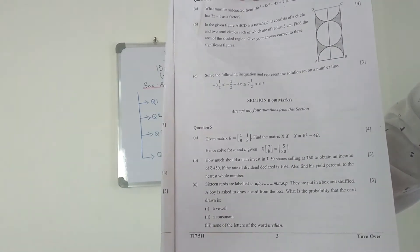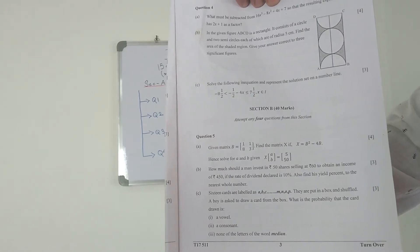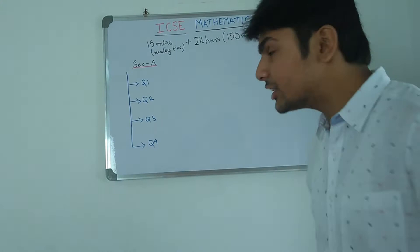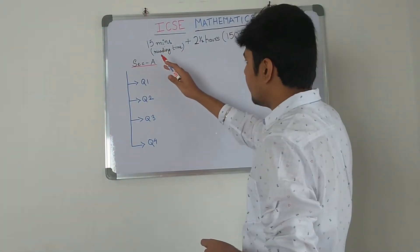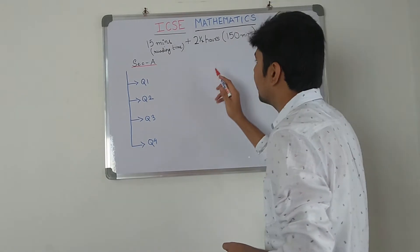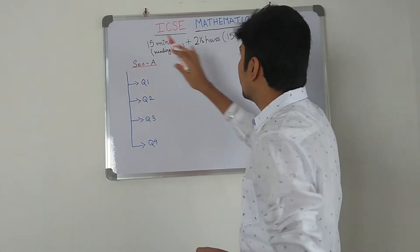So now that we are done with the general overview of the paper, let's keep it back. Now that we are done with the question paper, let's move on to the time management. You have 15 minutes reading time and 2 and a half hours writing time.